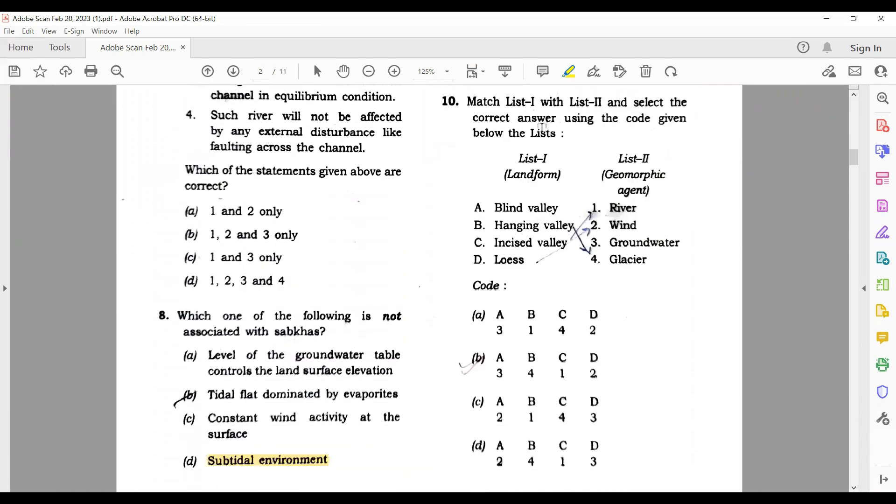Now let's move to the next question - match list one and list two and select the correct answer. Blind valley, hanging valley, incised valley, loess valley. This is again a very simple answer. Loess are wind, incised valleys of river. So the correct answer is B.